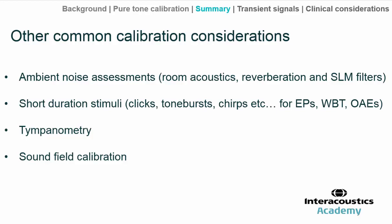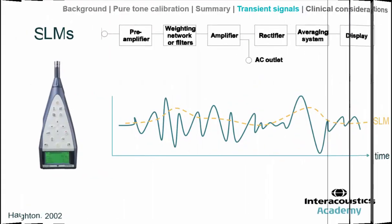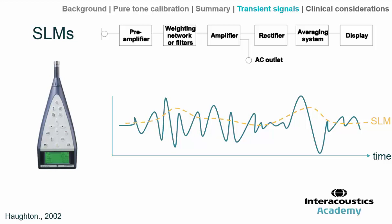For short-duration stimuli there's a marked difference in the approach. When it comes to sound level meters, many sounds measured by an SLM commonly fluctuate — speech sounds and other environmental sounds — not so much the pure tones we've been discussing, which are a very stable and relatively easy-to-measure signal. But many other types of signals that an SLM might be expected to measure fluctuate.